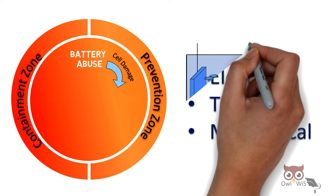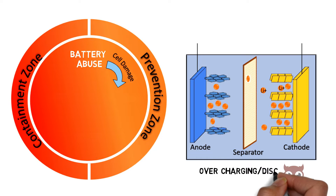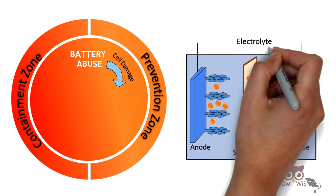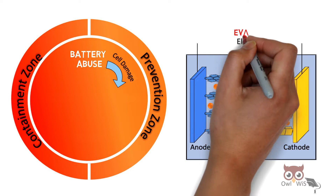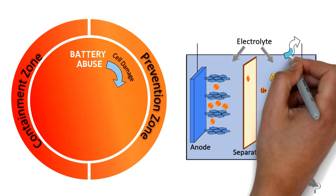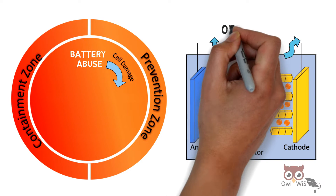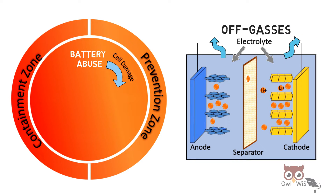Let us consider a single cell. When the battery is overcharged, over-discharged, or overheated, the electrolyte which is present in the battery in the form of liquid, due to chemical reactions, gets evaporated. Then, due to pressure, it gets released into the atmosphere, known as off-gases.